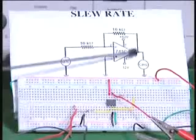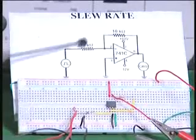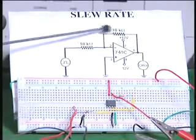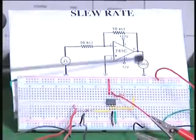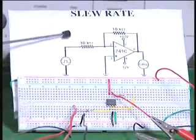I have the same circuit here with the two resistors, both of them equal to 10 kilo ohm. Therefore, it is a unity gain inverting amplifier.